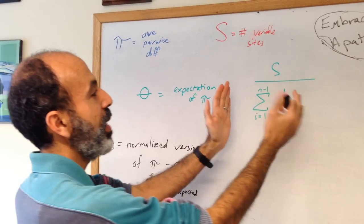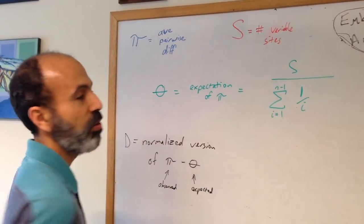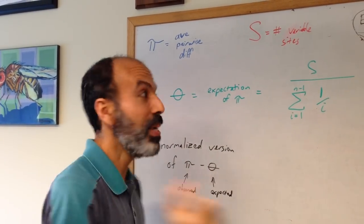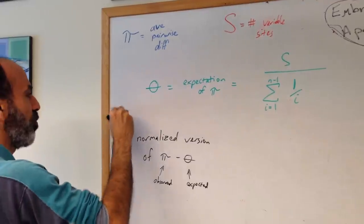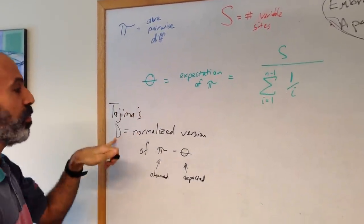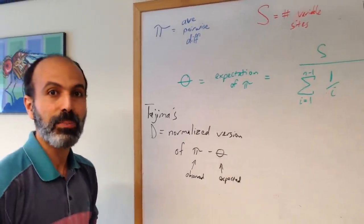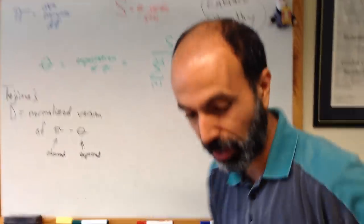Using this, you can say that in a standard population with nothing interesting happening, here's the expectation of pi of what it should be. Pi may not be right at this expectation. There's a measure referred to as Tajima's D. Tajima's D is a normalized version of pi, the observed, minus theta, the expected value. Let's look at a couple of DNA sequences so you can see what I'm referring to.